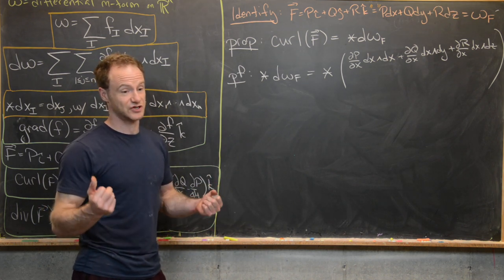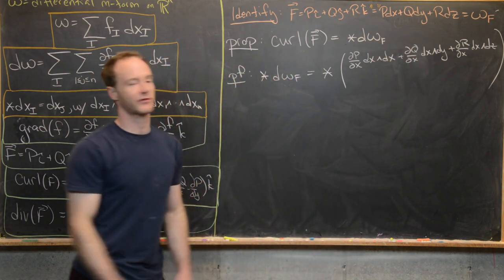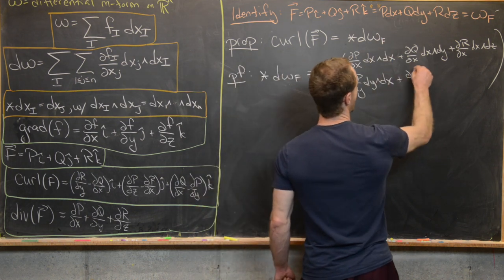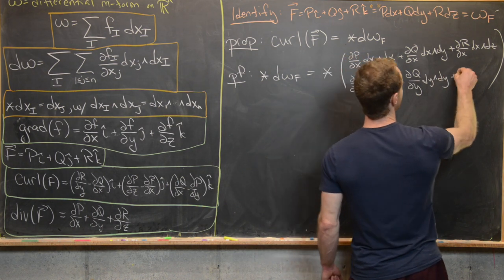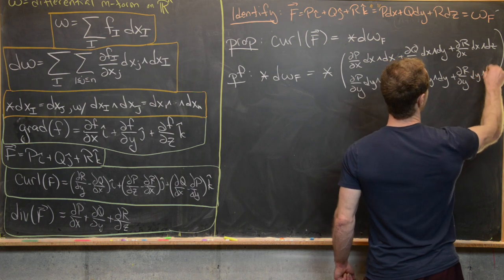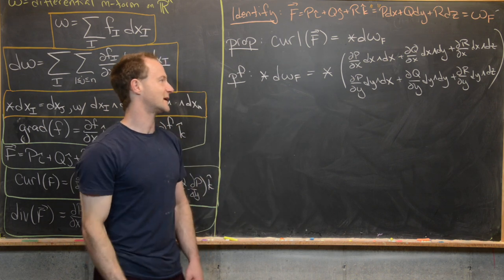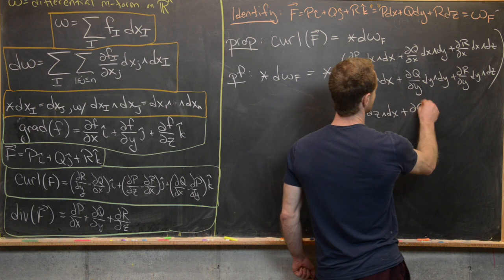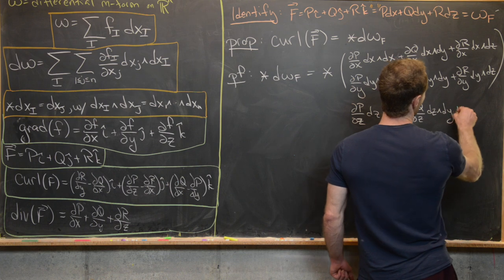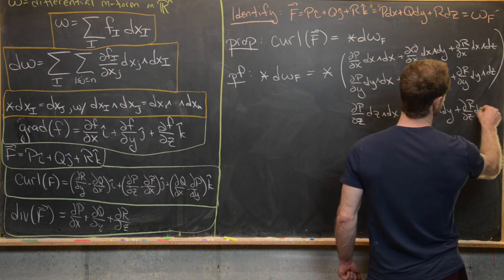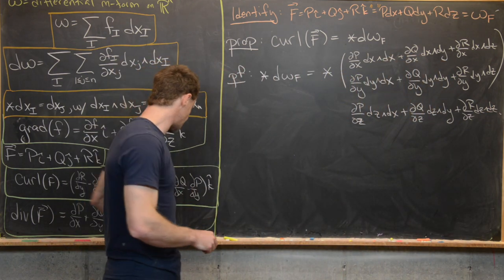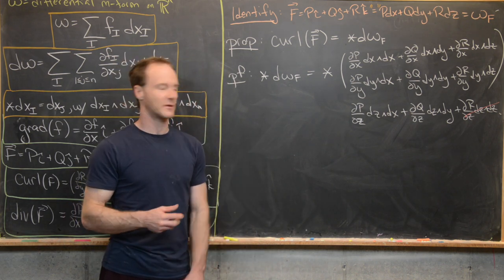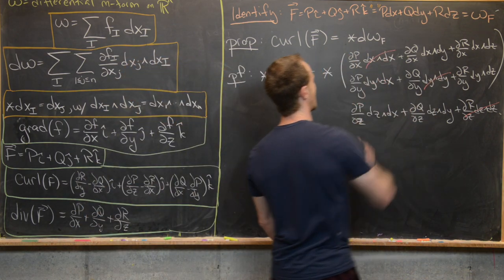Now the derivatives with respect to y: ∂P/∂y dy ∧ dx, ∂Q/∂y dy ∧ dy, ∂R/∂y dy ∧ dz. And the partials with respect to z: ∂P/∂z dz ∧ dx + ∂Q/∂z dz ∧ dy + ∂R/∂z dz ∧ dz. By anti-commutativity of the wedge product, we can simplify: dz ∧ dz = 0, dy ∧ dy = 0, and dx ∧ dx = 0.